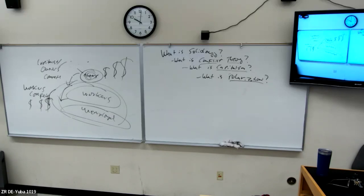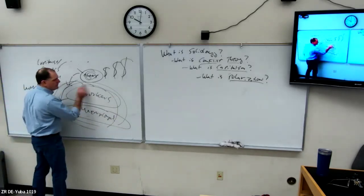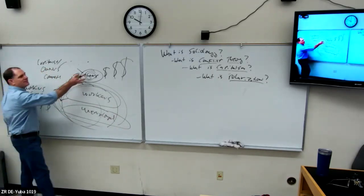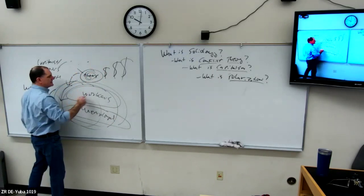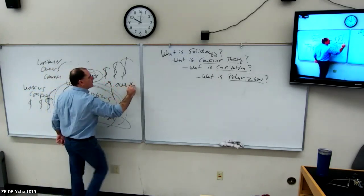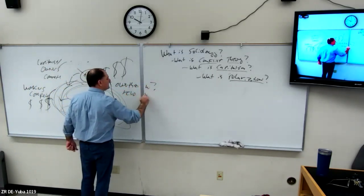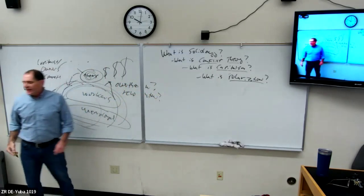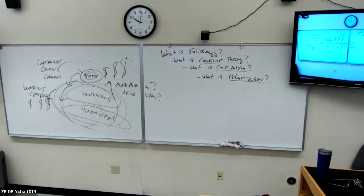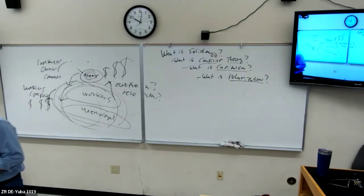According to Marx, this was going to lead to a situation where there were so many poor people making so little and so few rich people making so much that eventually the poor would just overthrow them — revolution is the term. As sociologists we can ask: has the worldwide working class come together to overthrow the capitalist system? No, they haven't. Is Marx wrong?